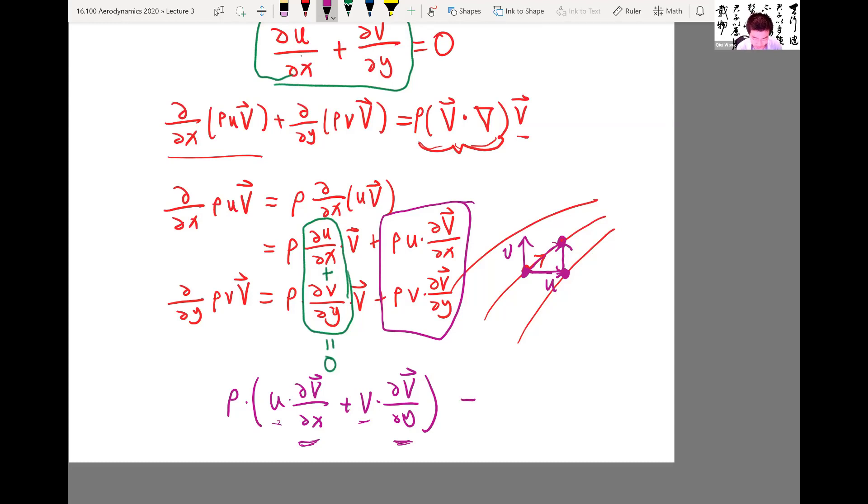So this is what we write out as ρ times, well, V·∇V. Just this, just to think of this as a notation, that's the rate of change, a directional derivative, what we call, of vector V along the V direction.